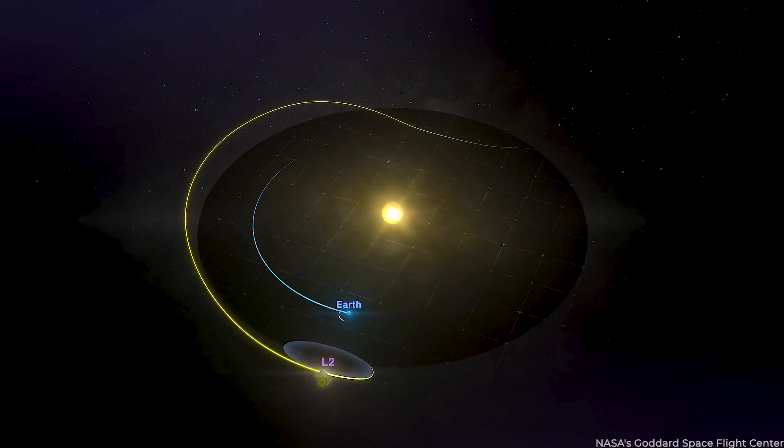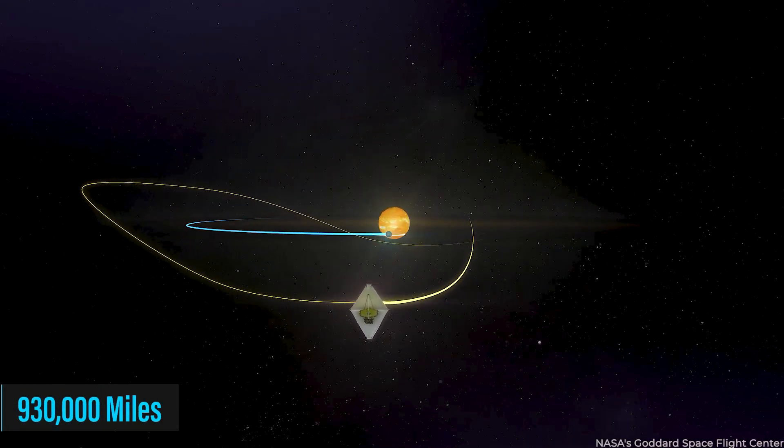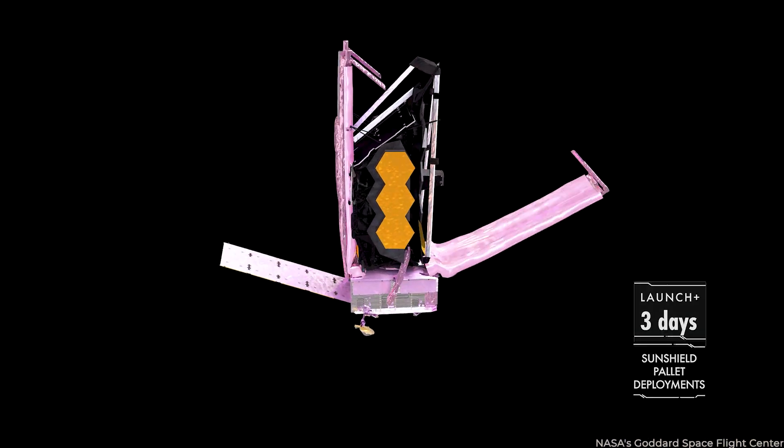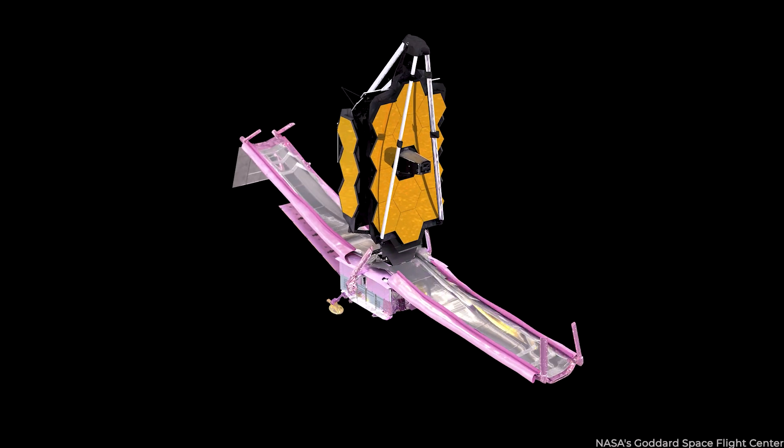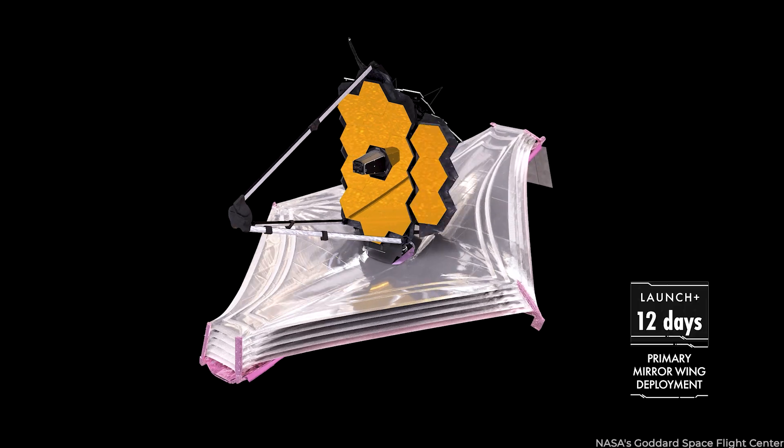The targeted Lagrange point of the telescope is an enormous 930,000 miles from our planet. It is only upon reaching this point that the advanced telescope unleashes its sunshield. The hexagonal mirrors of JWST are also able to spread out after this point.